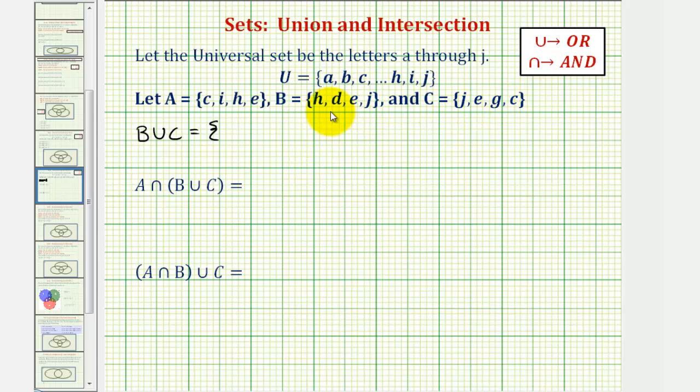So here's B and C. Let's see if we can put these elements in alphabetical order. So we would have C, D, E, G, H, and J. These are the elements that are in B or in C.